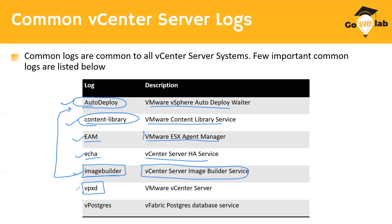VPXD is one of the most important services of vCenter Server — if VPXD is not running, vCenter Server will not work. For any vCenter Server-specific issues, vpxd.log should be the very first log you look at. Next, vPostgres is the Postgres database of the vCenter Server appliance. If you see database corruption or queries not returning data from the vCenter inventory, the vPostgres log folder is where you should be looking.